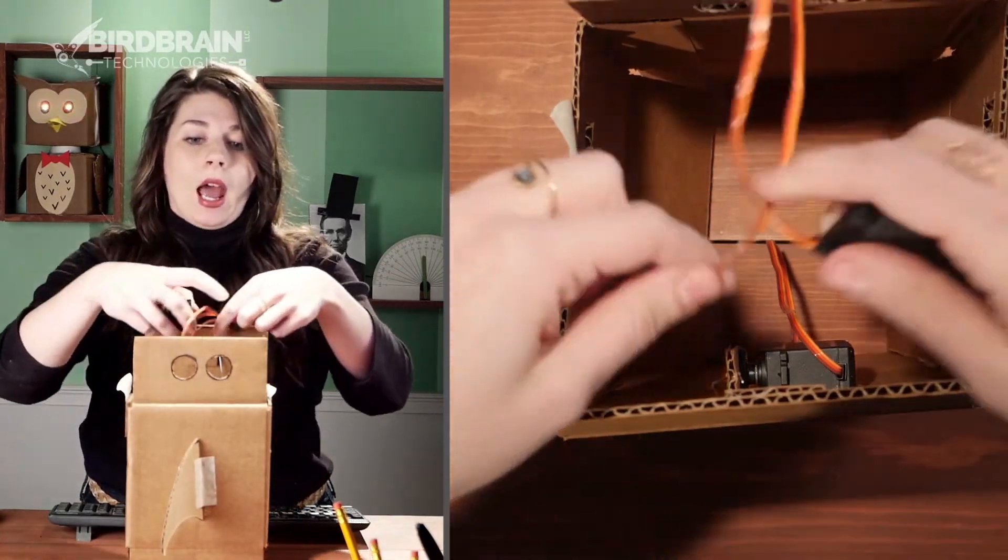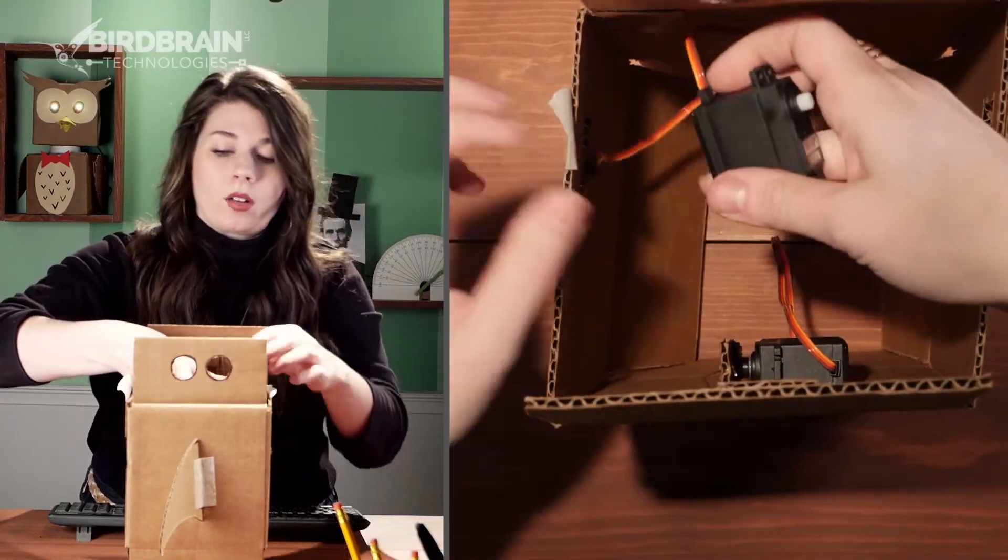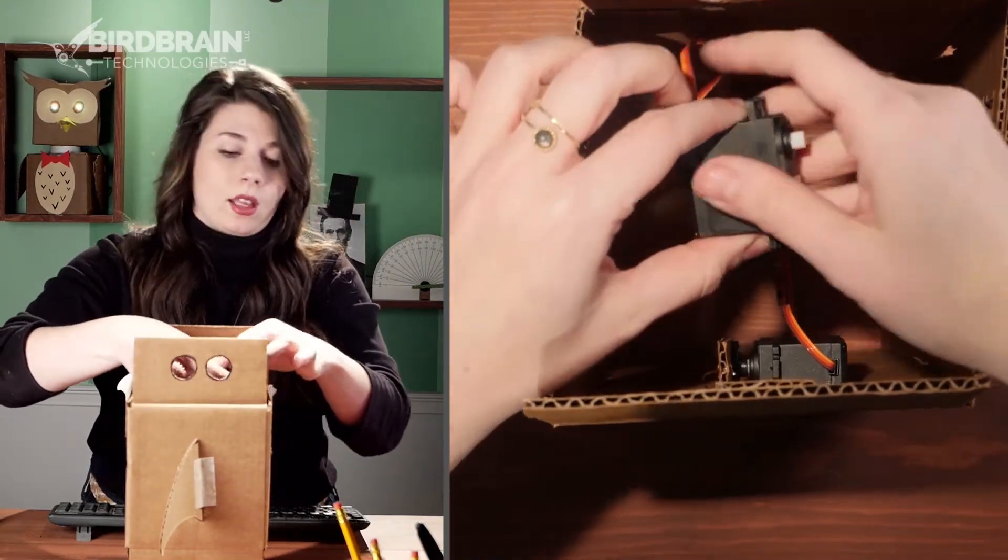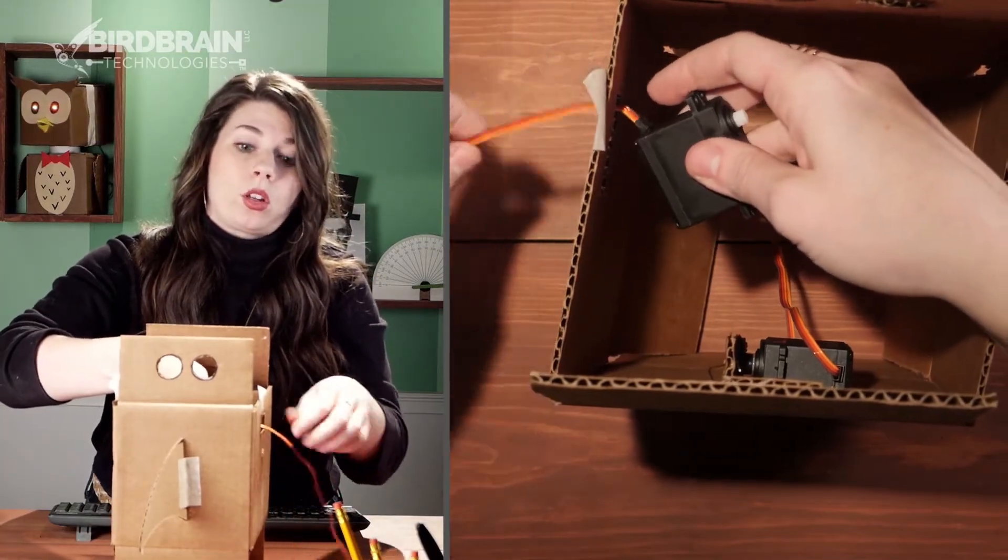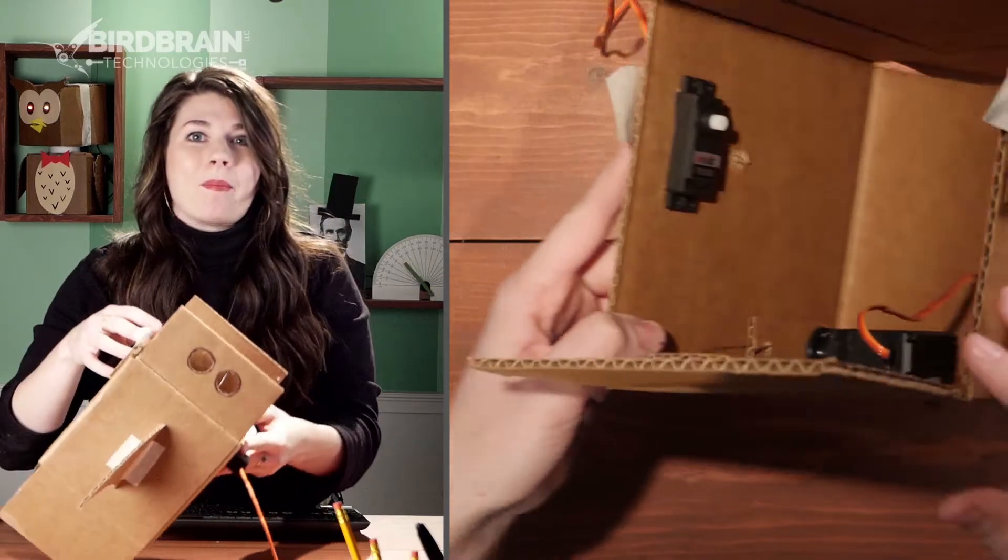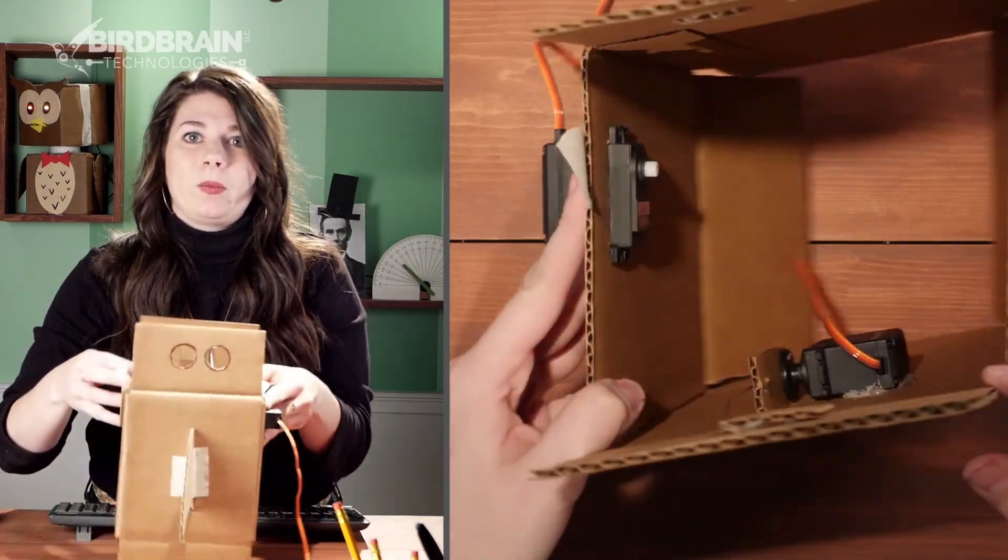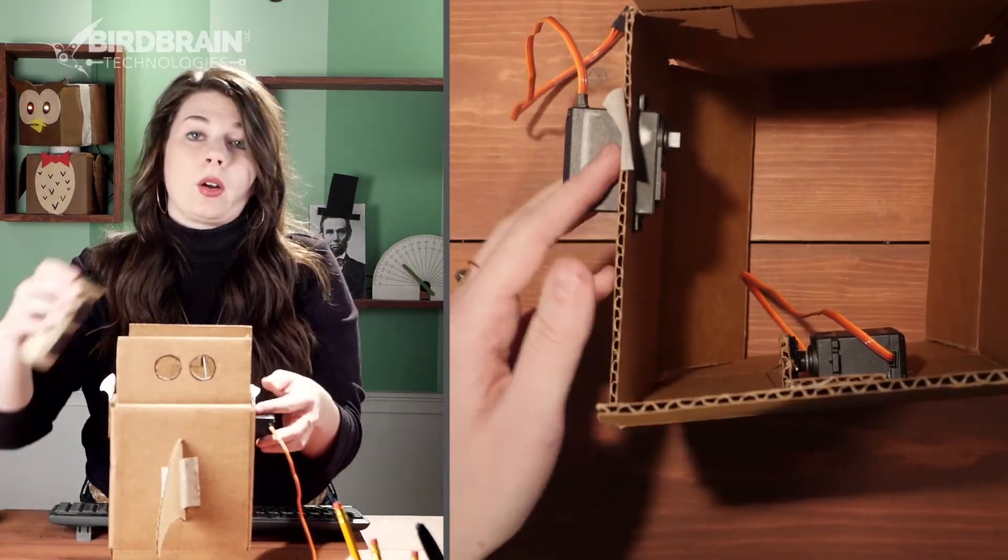So now when we put our motor in, I want to make sure that the moving part of the motor, the part with the little white thing, faces towards the inside. So I'm going to put the cord through, and then I'm going to pop that motor right in there, like so. And now without any tape or glue, that holds it in place.